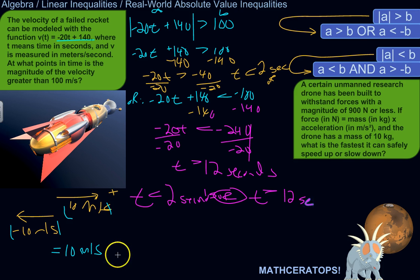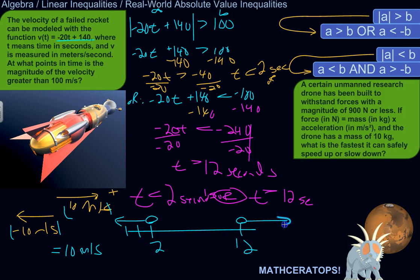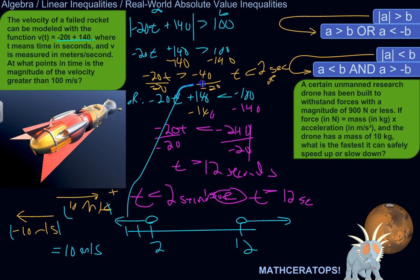The complete answer is t < 2 seconds or t > 12 seconds. On a timeline, from launch at 0, at 2 seconds the velocity drops below 100 m/s, and after 12 seconds the magnitude exceeds 100 m/s again — this time the velocity is negative because the rocket is falling downward. So the rocket goes fast, slows down, then nose-dives back down.